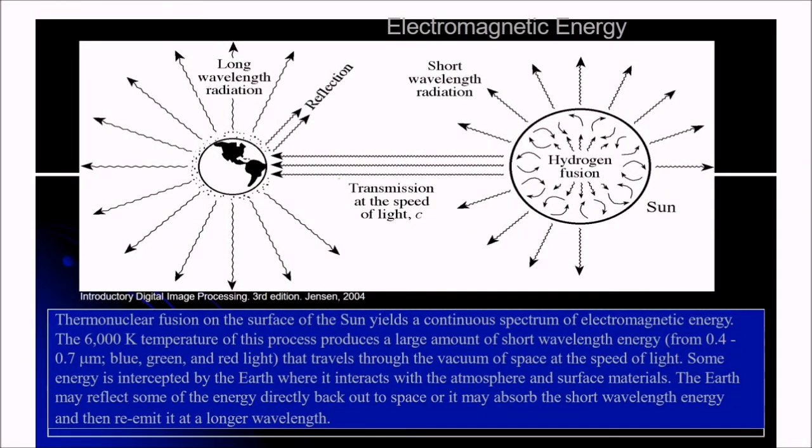This is an example of electromagnetic energy. The thermonuclear fusion on the surface of the sun yields a continuous spectrum of electromagnetic energy. This is the basic idea of passive remote sensing. The 6000 K temperature of this process produces a large amount of short wavelength energy from 0.4 to 0.7 and also on both sides of it. There is blue, green, red and travels through the vacuum of space at the speed of light.